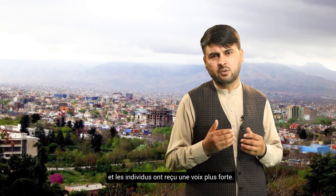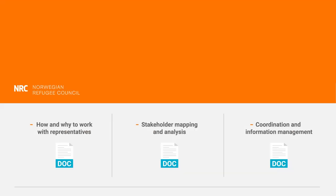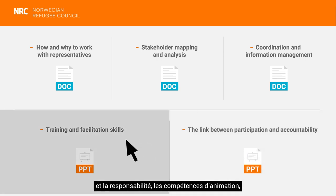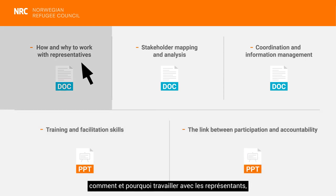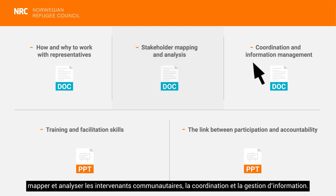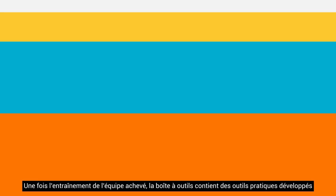Each part of the community found their own representation in each community group and individuals got a stronger voice. In the staff training chapter, there are modules on participation and accountability, community facilitation skills, how and why to work with representatives, community stakeholder mapping and analysis, and coordination and information management.